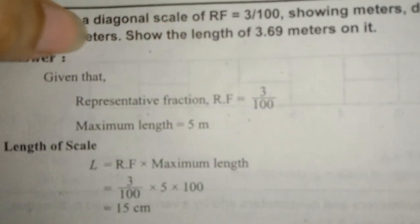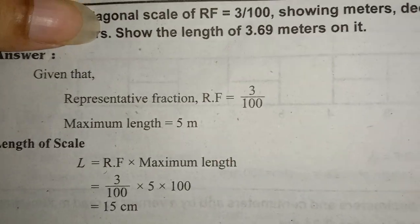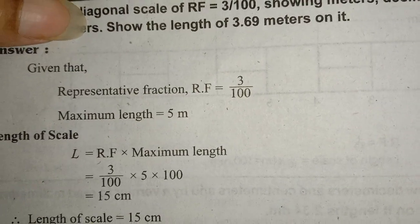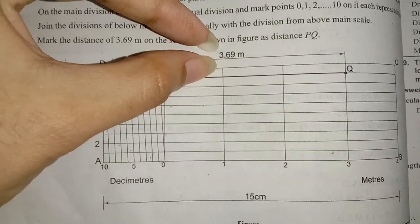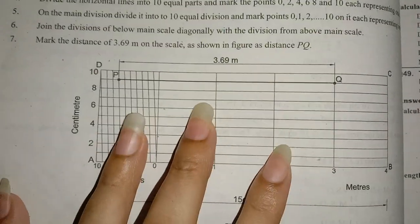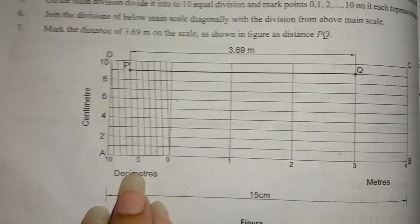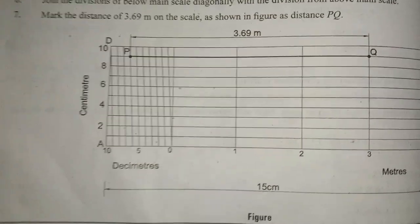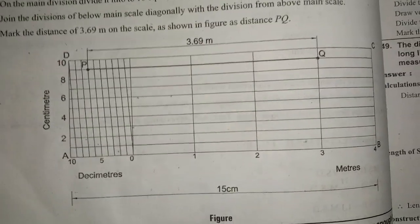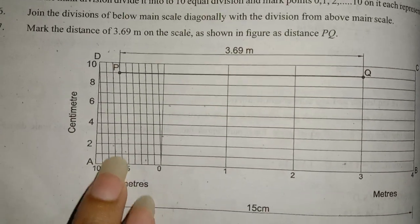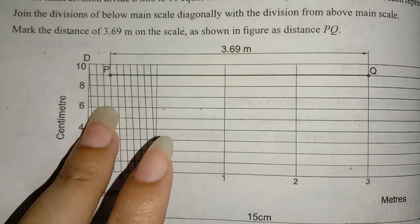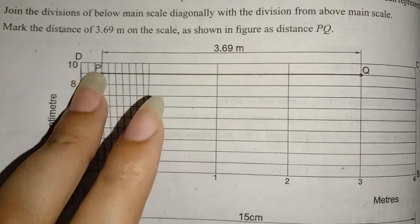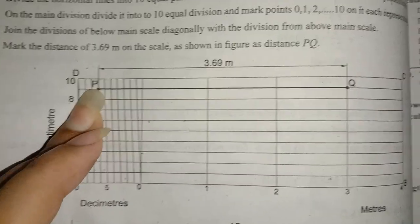Let me show you the length of 3.69. Let me measure this. Here — 9: 1, 2, 3, 4, 5, 6, 7, 8, 9. 9 is here.